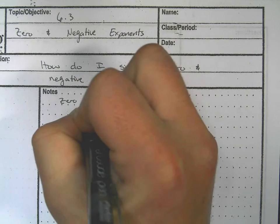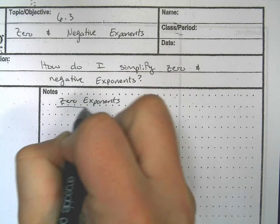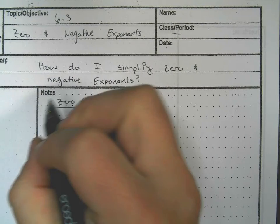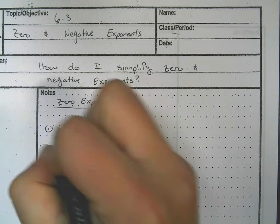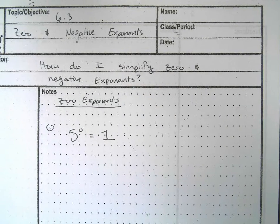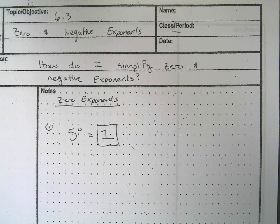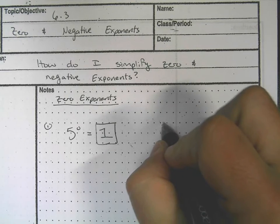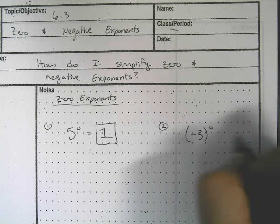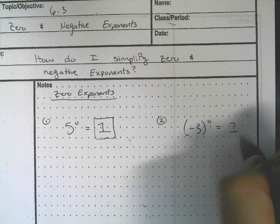For zero exponents, anything raised to the zero power equals one. So for example, five to the zero equals one, and we're done. Similarly, negative three to the zero also equals one.